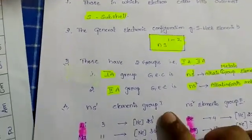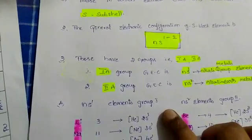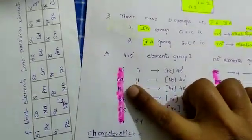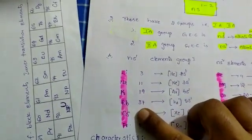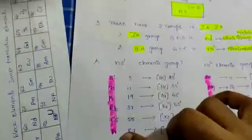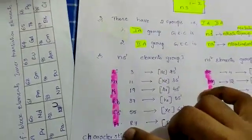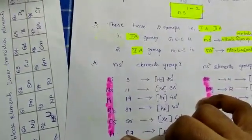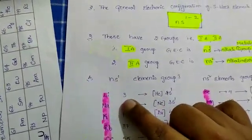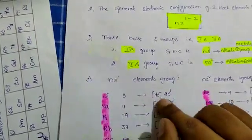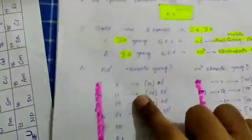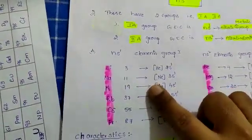Group 1A elements with NS1 configuration are: lithium, sodium, potassium, rubidium, cesium, and francium — lithium to francium are 1A group elements. Lithium has atomic number 3, with configuration [He] 2S1. Sodium has atomic number 11, with configuration [Ne] 3S1.